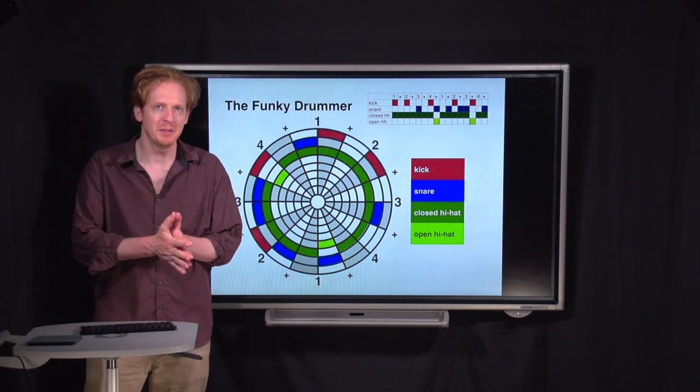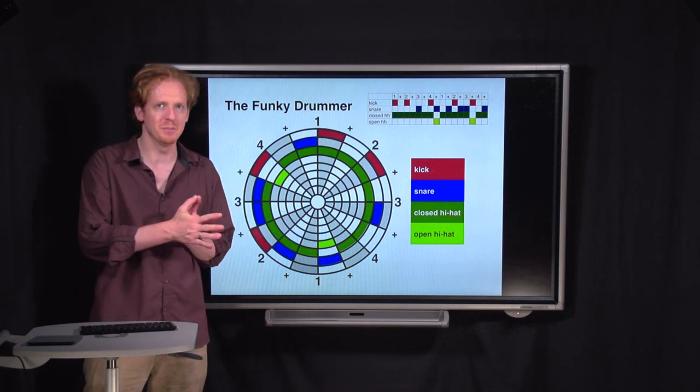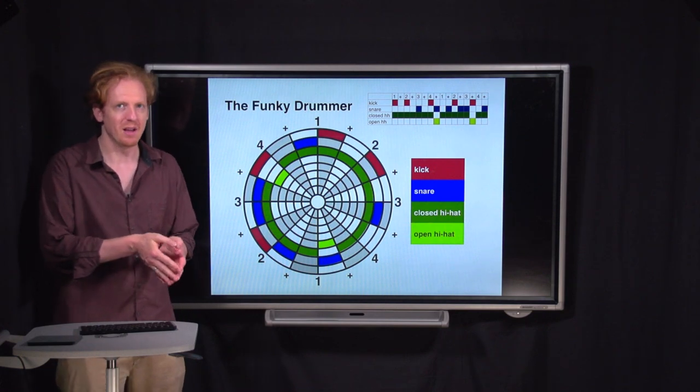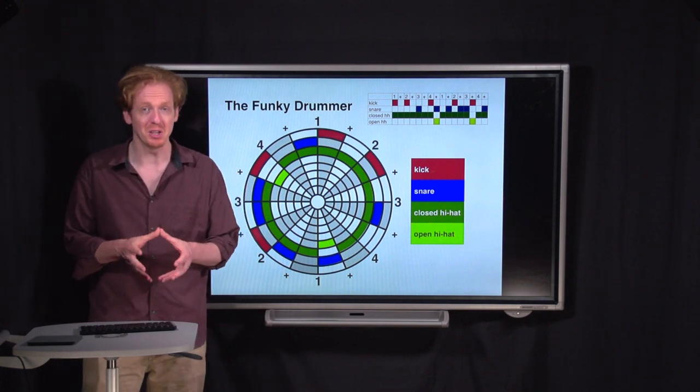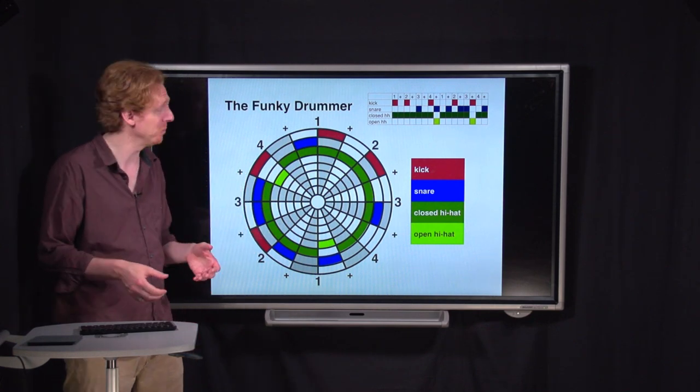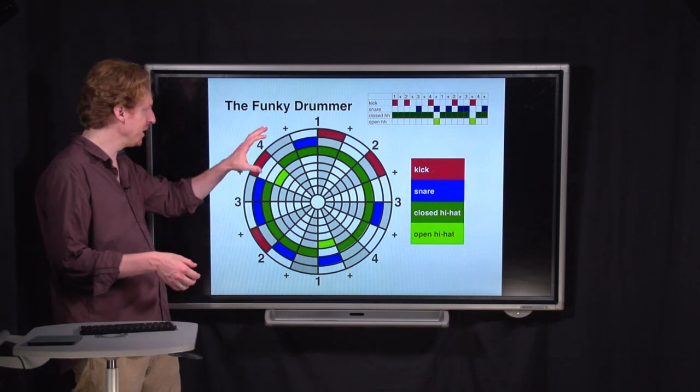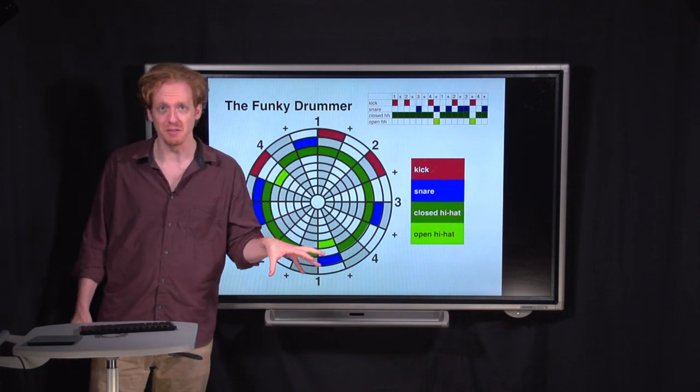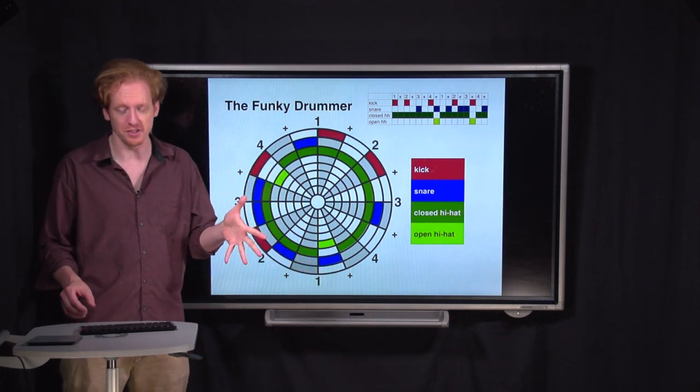Another extremely common hip-hop break beat. This is from The Funky Drummer Parts 1 and 2 by James Brown. This beat was played by a drummer named Clyde Stubblefield, who was only 18 years old when the recording was made, and it's an incredible one. And just from glancing at it, you can see that it's a lot more complicated than any of the beats we've talked about so far. So let's listen to it.